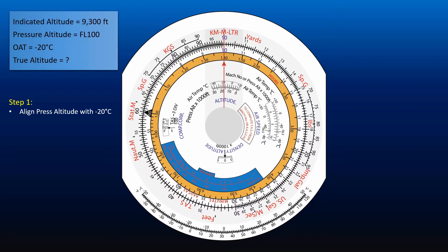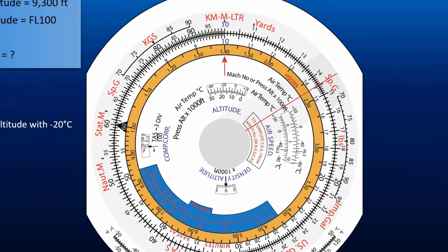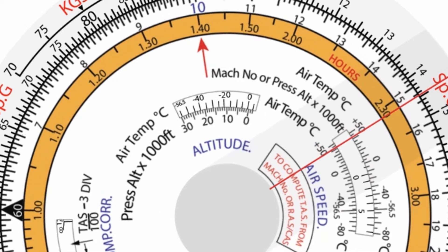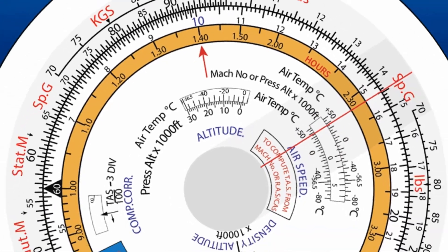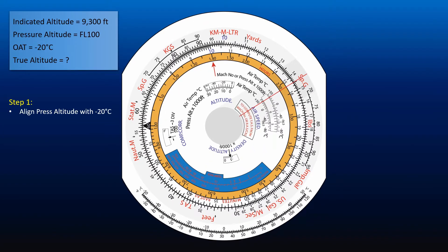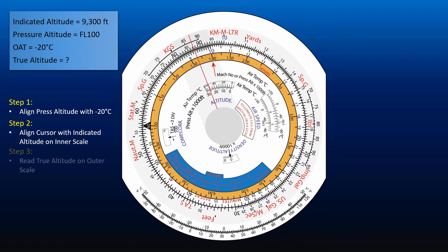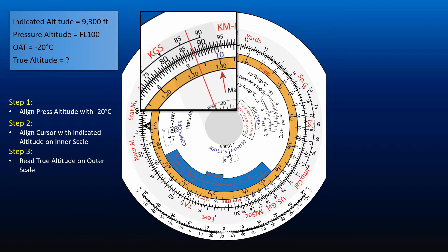I will first move the cursor so that we can see the operation clearer. Next, align the cursor with the indicated altitude, 9,300 feet, on the inner scale. Against the indicated altitude on the inner scale, read off the true altitude on the outer scale: 8,730 feet.